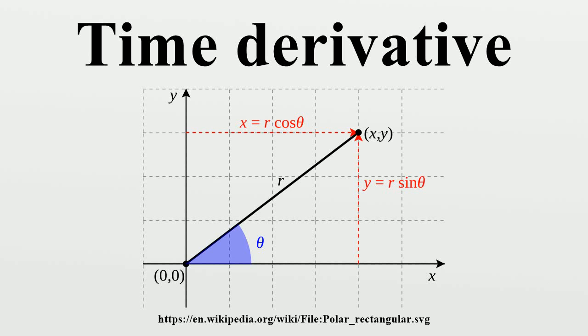A time derivative is a derivative of a function with respect to time, usually interpreted as the rate of change of the value of the function.